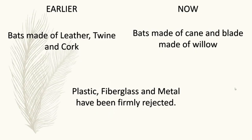Now let's come to the game equipment. Cricket changed along with the changing times, but the originality was kept intact — it started in England. Earlier, the bat was made of either leather, twine, and cork. Over time, the blade of the bat was made of willow and the handle was made of cane. Even today, both bat and ball are handmade — they are not industrially manufactured. Man-made materials like plastic, fiberglass, and metal are firmly rejected.